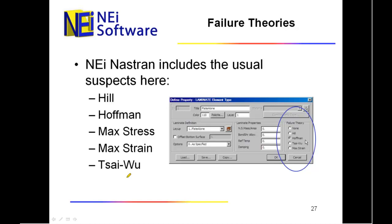Okay, now I'll talk about failure theories. Nastran includes a number of different failure theories, and the usual suspects are the Hill theory, the Hoffman theory, Max Stress, Max Strain, and Tsai-Wu. You'll find virtually any finite element code will include these.